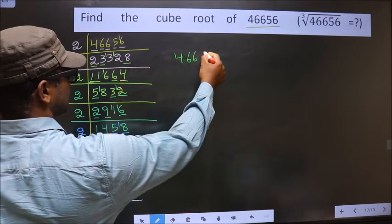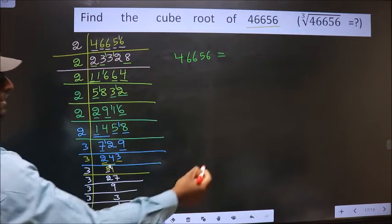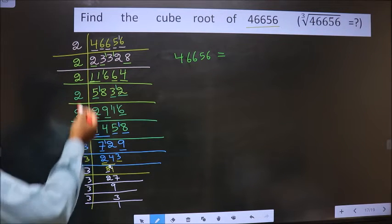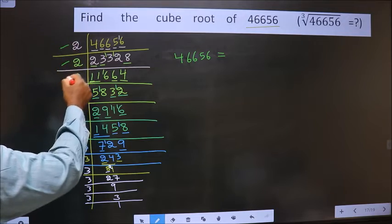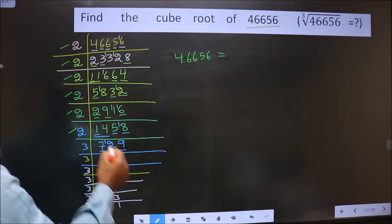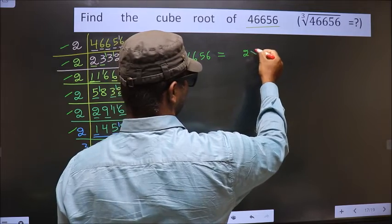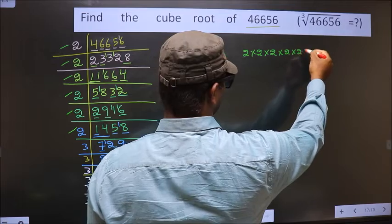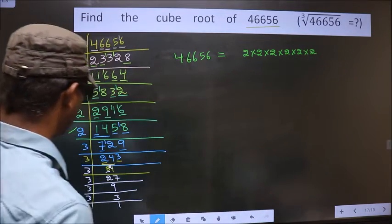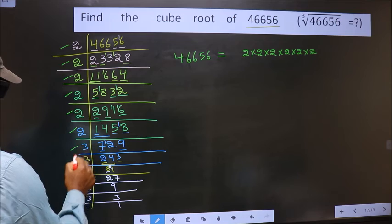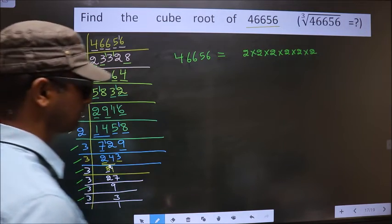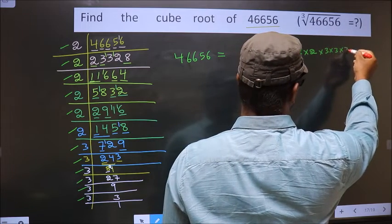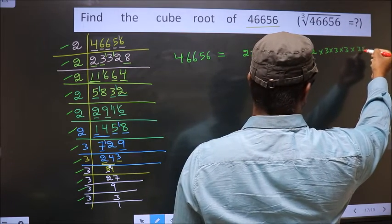So 46656 equals the product of all these prime factors. How many times did we get 2? — 1, 2, 3, 4, 5, 6 times. So: 2×2×2 × 2×2×2. How many times did we get 3? — 1, 2, 3, 4, 5, 6 times. So: 3×3×3 × 3×3×3.